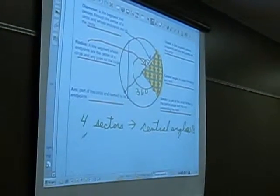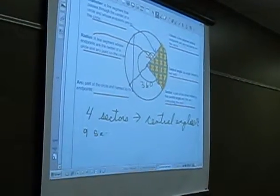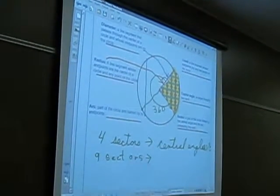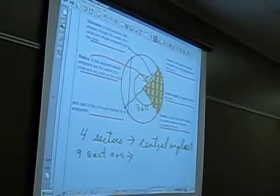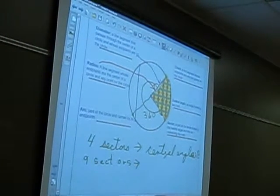Let's make it a little different. What if there were nine sectors? Lucy? Nine sectors. What would the measurement of the central angle be? If there were nine sectors.